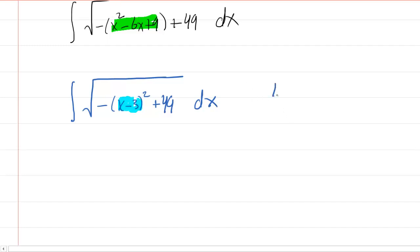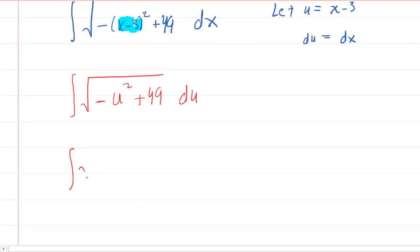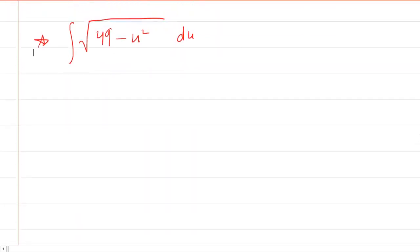We're going to let u equal x minus 3. If we differentiate both sides with respect to x, we see that du equals dx. So now we've rewritten the problem again. We have the square root of negative u squared plus 49, and dx becomes du. If we flip the terms underneath the radical, we have 49 minus u squared underneath that square root. This is the key form that's going to resemble one of our trigonometric substitutions. Let's take a look at a table.